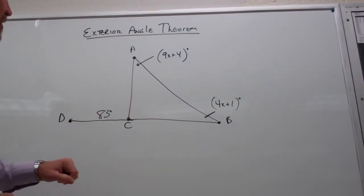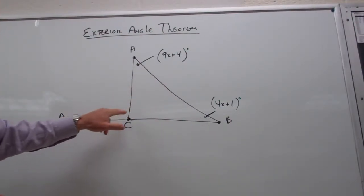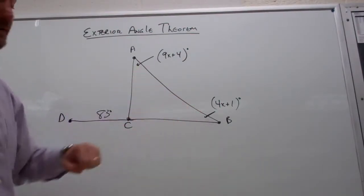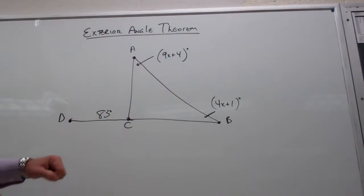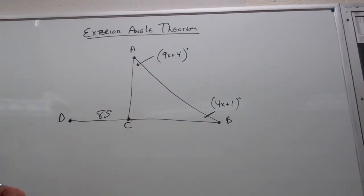And the remote interior angles are the interior angles of the triangle that are not next to the exterior angle. So we have two remote interior angles and the sum of these must be equal to the exterior angle.